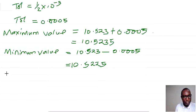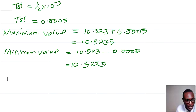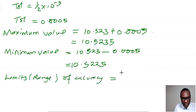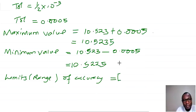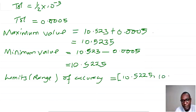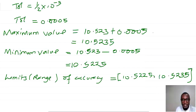Remember, we also looked at something in the previous video about the limits of accuracy. The range is written with square brackets: minimum value, maximum value. So the minimum value is 10.5225 and the maximum value is 10.5235. This is the limits of accuracy for the value 10.523.